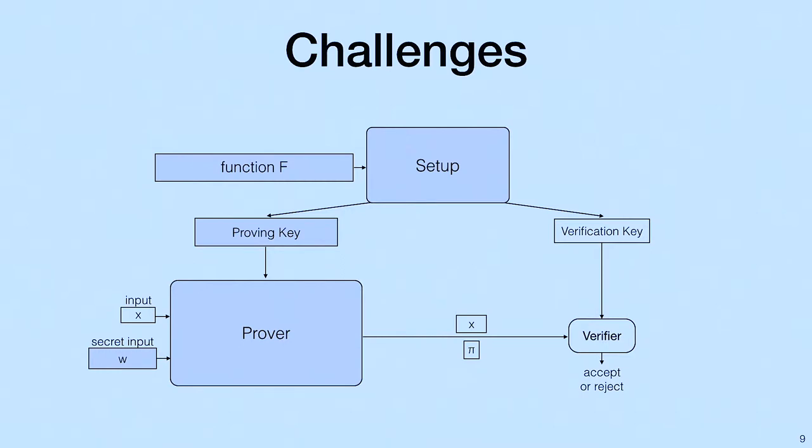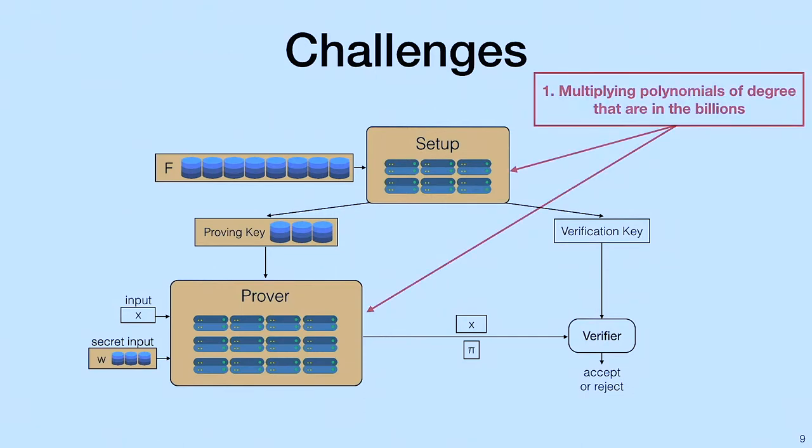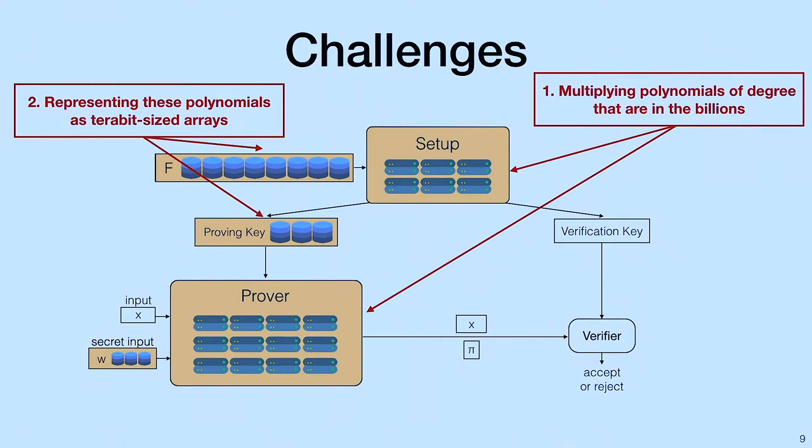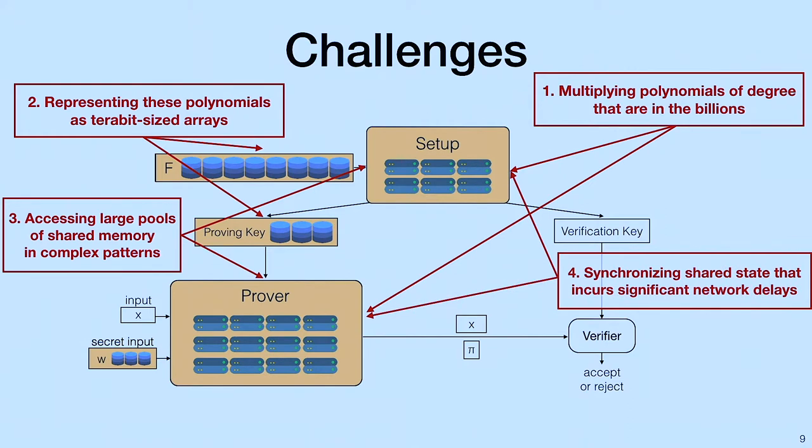Let's take a look at this diagram of a ZK-SNARK protocol. I want to point out that the verifier in this context is extremely small and cheap to run. Therefore, we're going to turn our attention to the setup and the prover. At first glance, we'll want to spin up a cluster of machines and run the setup and prover on it. Next, we would want to use a distributed data structure to represent our public function f, our proving key, and our secret input. However, there were several challenges that arise. First, we're multiplying polynomials of degree that are in the billions. Second, we're representing these polynomials as terabit-sized arrays. Third, we're accessing large pools of shared memory in complex access patterns. And fourth, we're synchronizing shared state that incurs significant network delays.